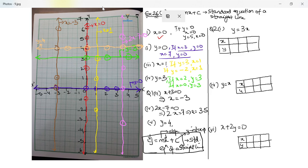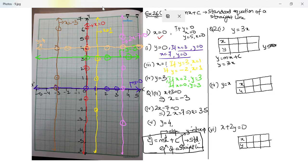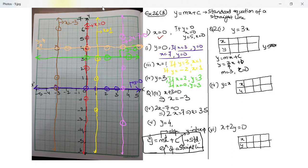Let's move on to question number two, part one: y equal to 3x. Here you make a table with values of x and y. Comparing with y equal to mx plus c, the value of m is three and c is zero — there is no constant element. y is the dependent variable and x is the independent variable.